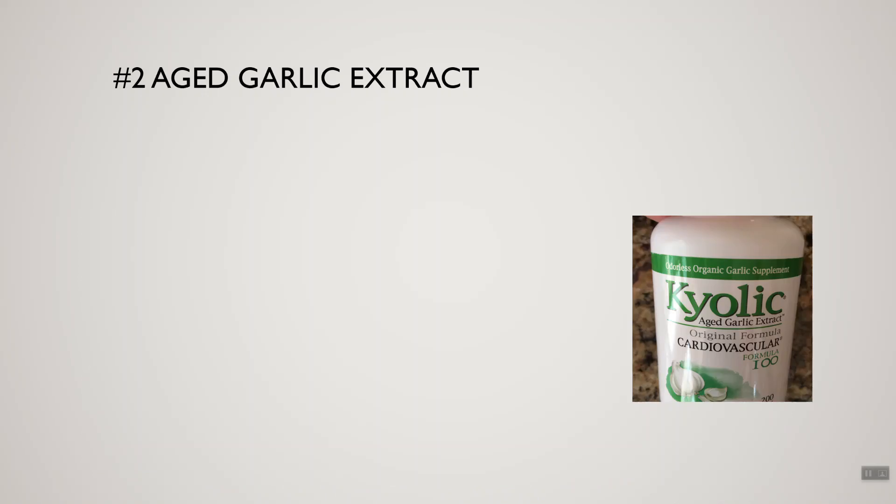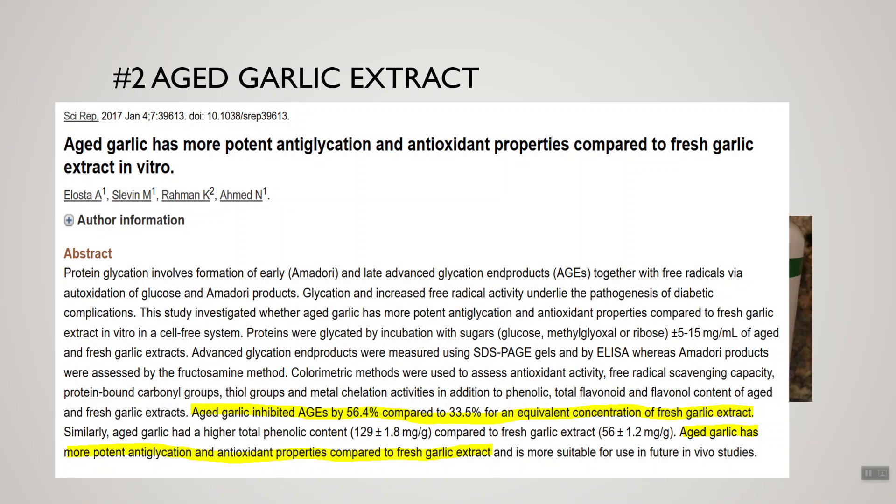There are other ways to lower the production of advanced glycation end products. Here's a dietary supplement called aged garlic extract — it's not garlic, it's an extract of garlic made by a company called Kyolic. Garlic has a variety of studies showing it has many health benefits, including reducing AGE formation. This study compared aged garlic extract to fresh garlic and noted that the aged garlic extract reduced AGE formation by about 56% compared to about 33% for fresh garlic extract.